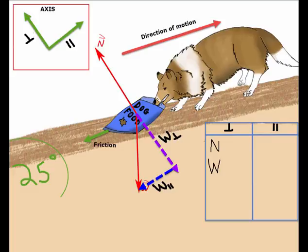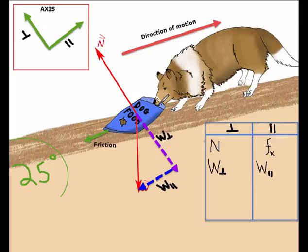but remember that this is the perpendicular component of W. For the parallel direction, we have friction. Notice that I have a little k in front of this. This means that for this example, the bag is in motion. And we also have the parallel component of weight.